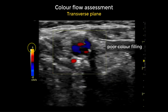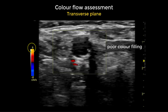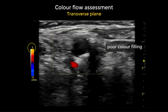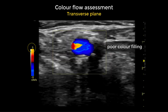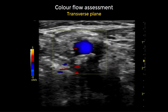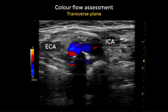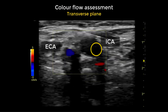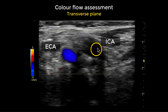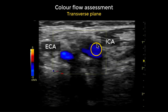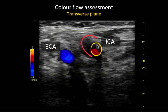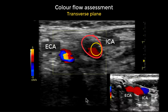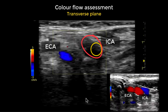We lower the scale as low as we can to better the colour filling; however, we can still see a filling defect within the internal carotid artery. Only part of the lumen is filled with colour flow, while the remaining part of the artery is not filled.